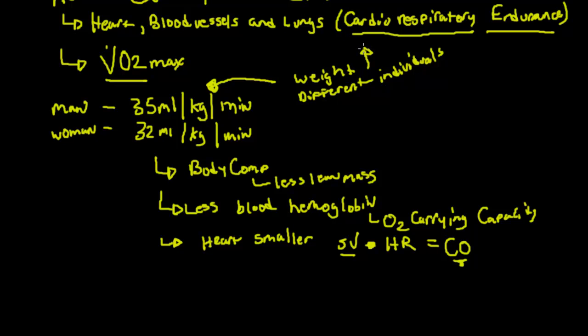That's the reason we have to factor in weight into this equation. So we're getting 35 milliliters of oxygen out to the tissue per kilogram of body weight per minute.